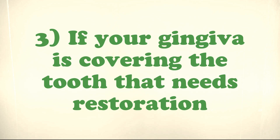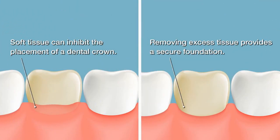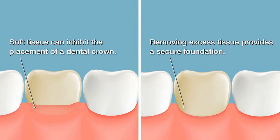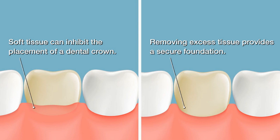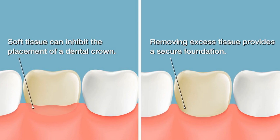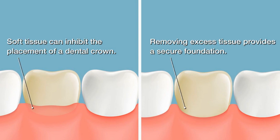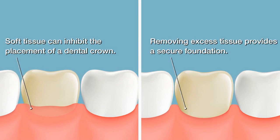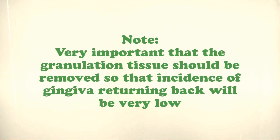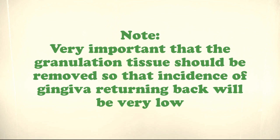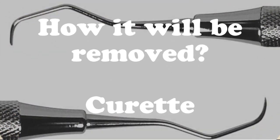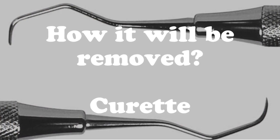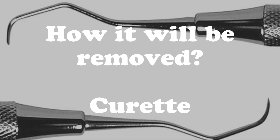As you can see in the picture, excess gum tissue is covering the tooth surface. In cases of subgingival caries, we cannot remove the caries if gum tissue is covering the area, so we must cut the gingiva and bone — that equals crown lengthening. Note: during crown lengthening, you must remove the granulation tissue so that the chance of the gingiva returning is very low. You can remove granulation tissue using curettes — for posterior areas, curettes number 7, 8, 9, and 10.